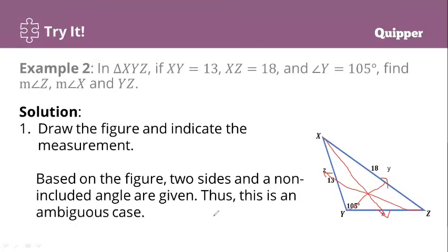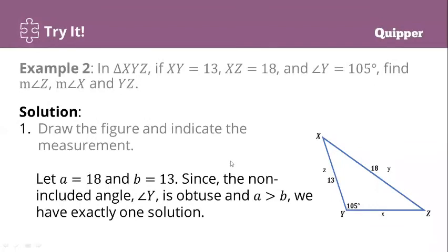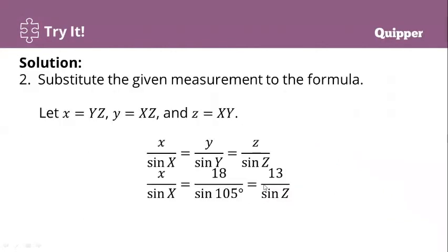Based on the figure, two sides and a non-included angle are given. Thus, this is an ambiguous case. So to solve for this, we have the following solution. Let a be equal to 18 and b be equal to 13. Since the non-included angle, which is angle Y, is obtuse and side a is greater than side b, we have exactly one solution for ambiguous case. Substitute now the values. We let x be equal to YZ, y be equal to XZ, and z be equal to XY. We now have the formula: x over sine X equals y over sine Y equals z over sine Z.